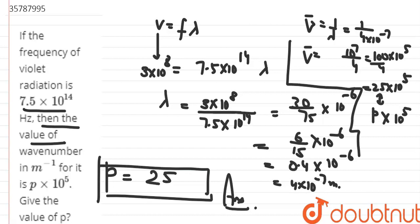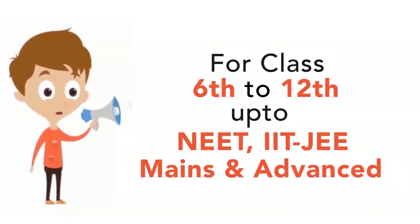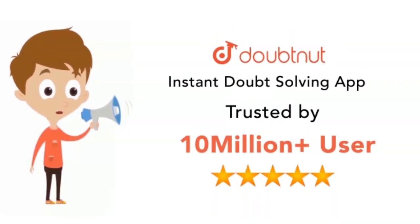So the answer is p equals 25. To solve this, we need to know that v equals f lambda, where v for electromagnetic radiation is 3 × 10⁸, and that wave number equals 1 by lambda. This is for IIT and advanced level students.